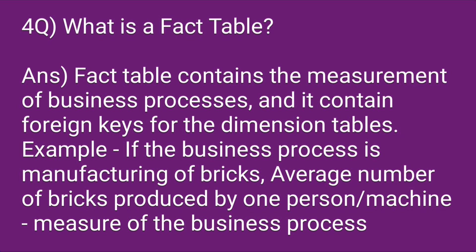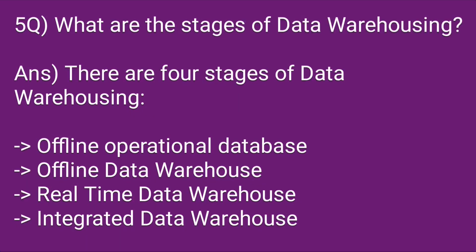What is a fact table? A fact table contains the measurements of business processes and it contains foreign keys for the dimension tables. For example, if the business process is manufacturing of bricks, the average number of bricks produced by one person per machine is a measure of the business process.